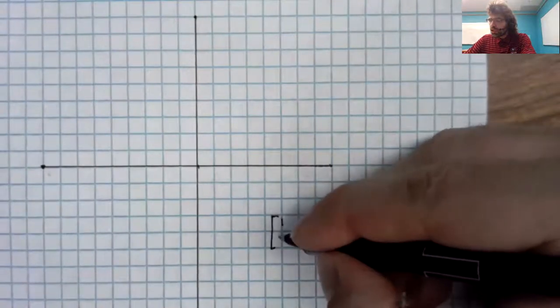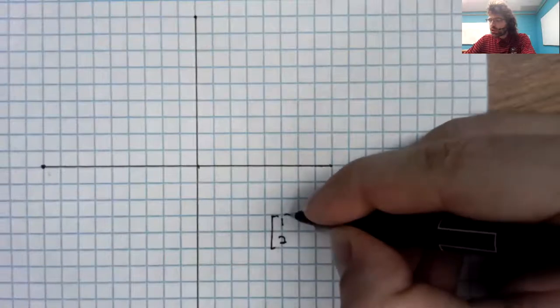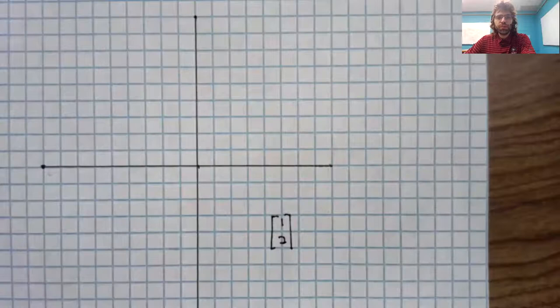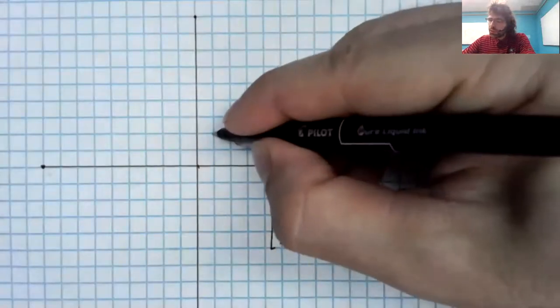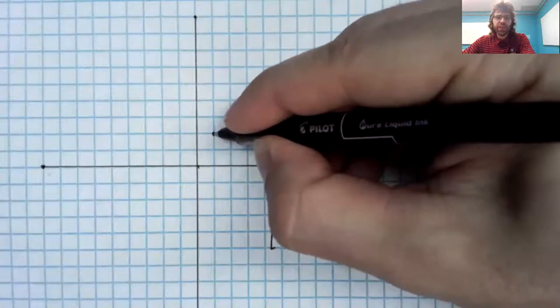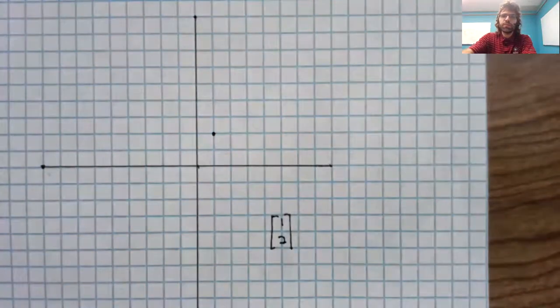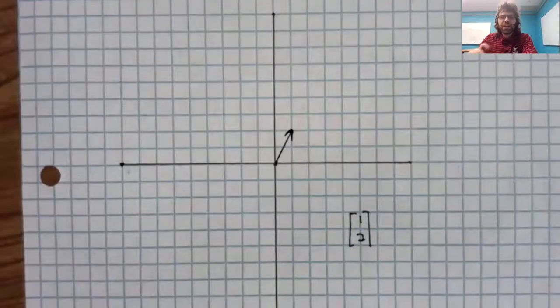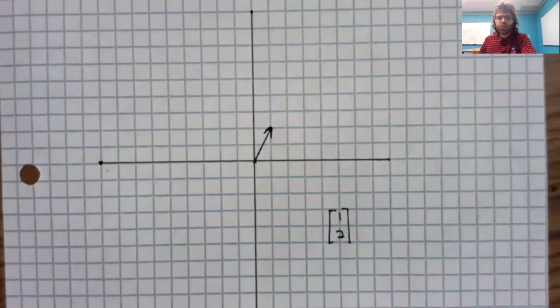Let's look at the vector [1,2]. Well, the point one comma two is here. So there's the vector [1,2].